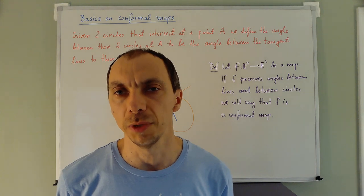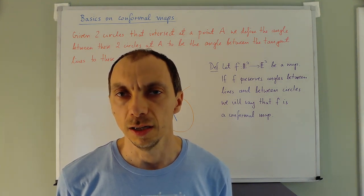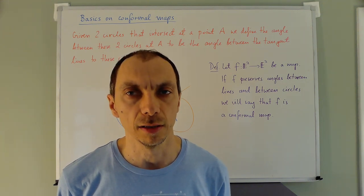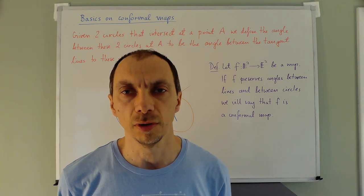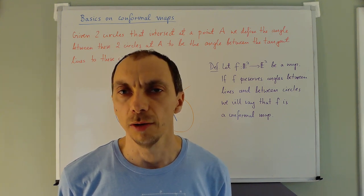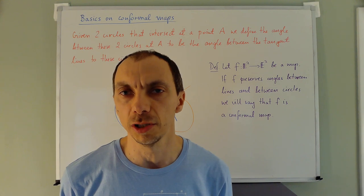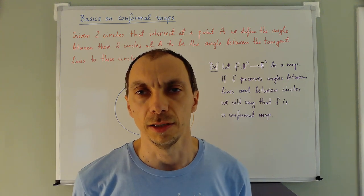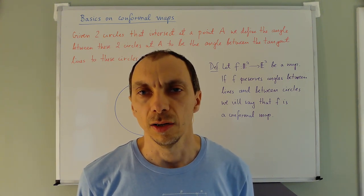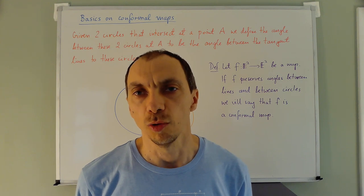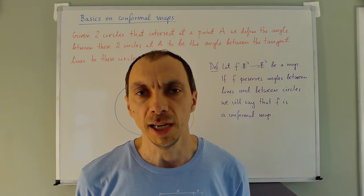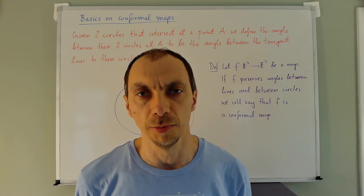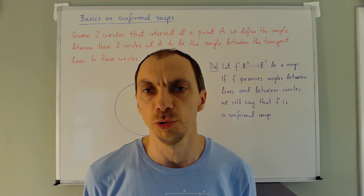However, as you know very well from the example of an inversion, lines under transformations on the plane need not be mapped to lines. In particular, inversions map certain lines to circles. So how would you then measure the angle of the images if they are no longer lines? This is a problem that is very well known in geometry, and a general way to tackle it is to talk about tangent lines. So you don't define an angle between two lines; you define an angle between two smooth curves.